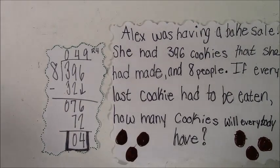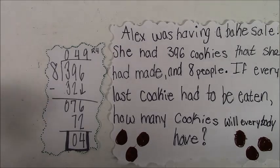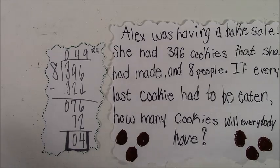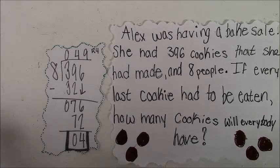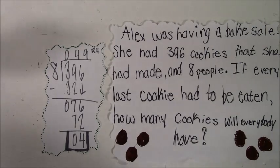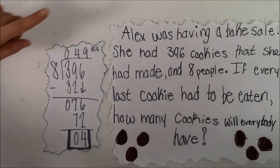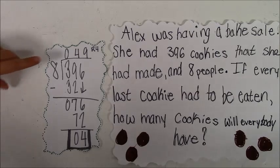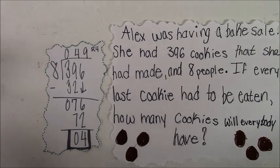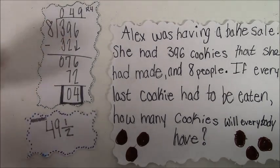Here's our problem. We did 396 divided by eight and got 49 remainder four. In this case, you can split up the last cookie since it's not a person. You can cut the cookie into equal pieces. The way you turn it into a fraction is you take the remainder and use it as the numerator, and take the divisor and use it as the denominator. So four-eighths is equal to one half, making the answer 49 and a half cookies.